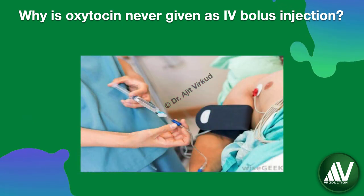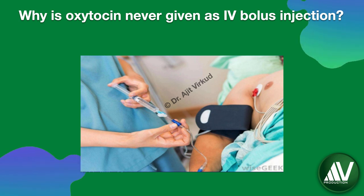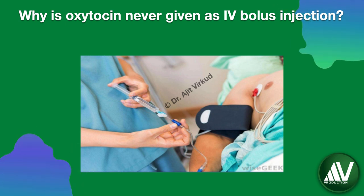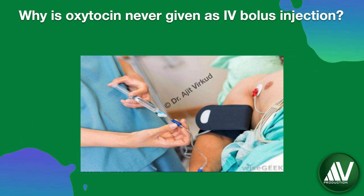Q: Why is oxytocin never given as an intravenous bolus injection? When given as an IV bolus, oxytocin causes transient vasodilation leading to profound hypotension, which can be fatal. Hence, oxytocin should always be administered intravenously as a dilute solution at a controlled rate.